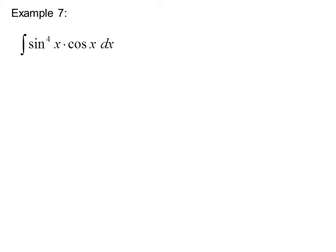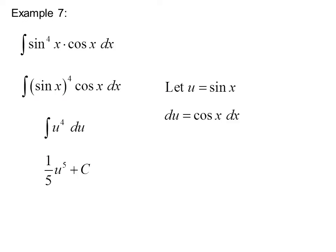Example 7. Integral of sine to the 4th x times cosine x dx. Which we could rewrite as integral of sine x to the 4th cosine x dx. Let u equal sine x. Du equals cosine x dx. When we substitute, we get an expression that's easy to integrate. We get 1 fifth u to the 5th plus c. But remember u was sine x. So we have 1 fifth sine to the 5th x plus c.